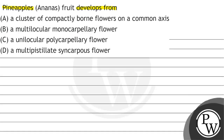Four options are given. Option A: a cluster of compactly borne flowers on a common axis. Option B: a multilocular monocarpellary flower. Option C: a unilocular polycarpellary flower. Option D: a multi-pistillate syncarpous flower.